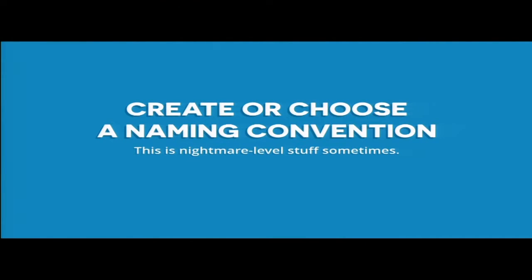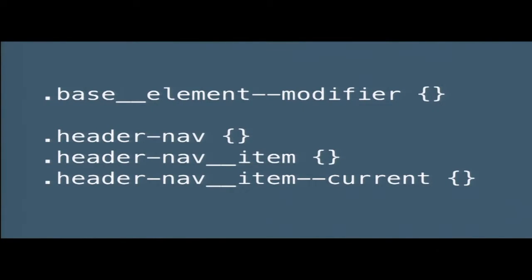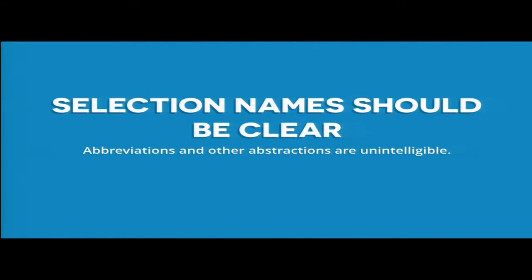Naming conventions — people fight over them, but I like BEM naming patterns. I don't really care whether they use underscores or dashes. BEM stands for Block Element Modifier: you start with the base — like 'header-nav' — then you have an element, like an item in the header nav, and the modifier, which could be 'current', 'active', or 'focus'. That allows you to know what's going on when you read a selector, and you don't have to nest things.